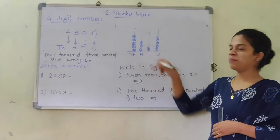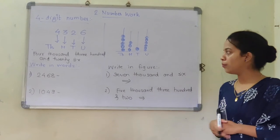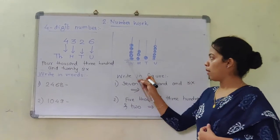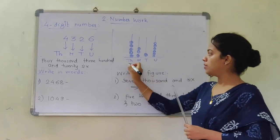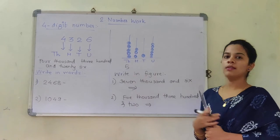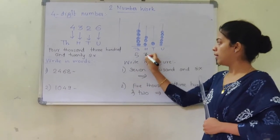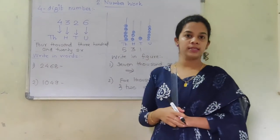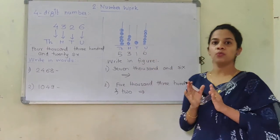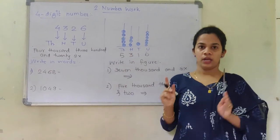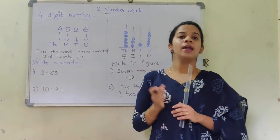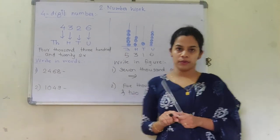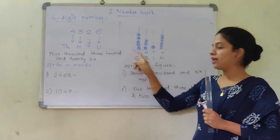We are going to form a digit from the given bits. At the thousands place, counting the bits: 1, 2, 3, 4, 5 — so there are 5. At the hundreds place there are 3, at the tens place there is 1, and at the units place there are 6. One important thing to remember: 'T' stands for tens and 'TH' stands for thousands — there should be no confusion between the two.